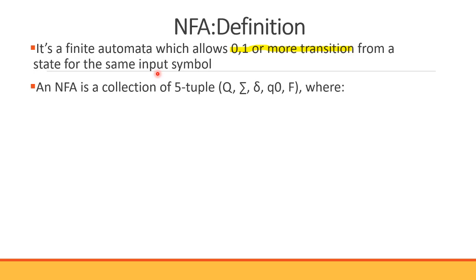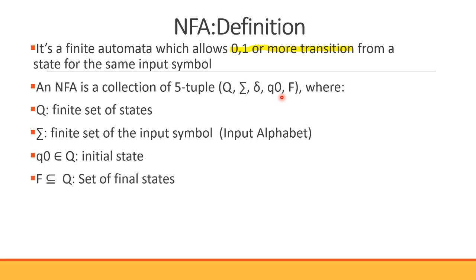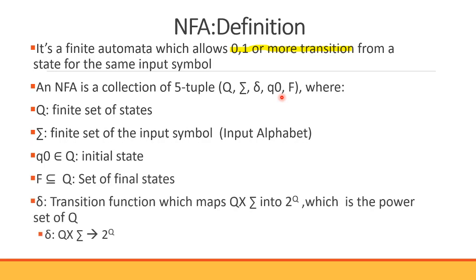Finite automata has two types: DFA and NFA, distinguished by the number of transitions. NFA is a collection of a 5-tuple: Q, sigma, delta, Q0, F — the same as DFA. Q is the finite set of states, sigma is the input alphabet, Q0 is the initial state, and F is the final set of states. The difference is in delta: in NFA, delta is a transition function which maps Q cross sigma into 2 raised to Q, which is the power set of Q.